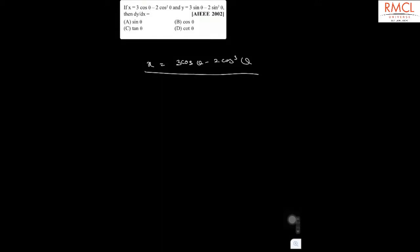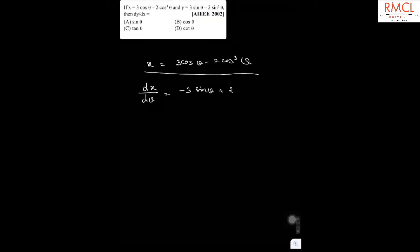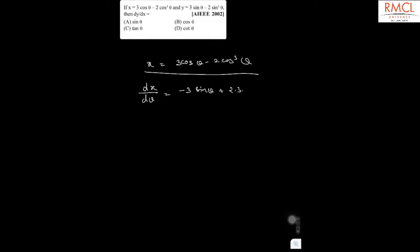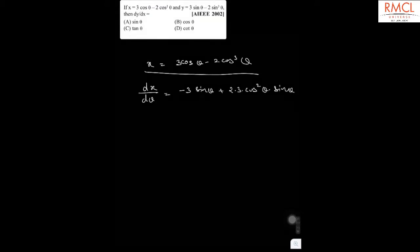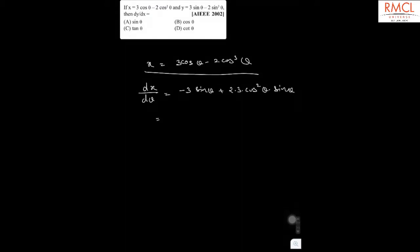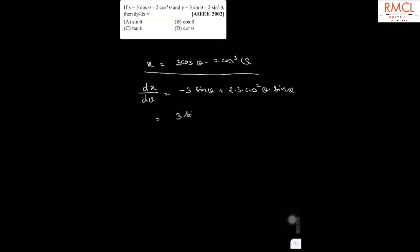If x is equal to this, then dx by d theta is minus 3 sin theta plus 2 multiplied by 3 cos square theta sin theta. So this is 3 sin theta multiplied by 2 cos square theta minus 1.